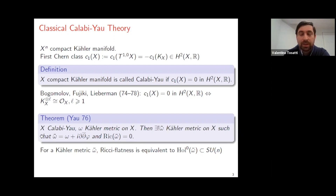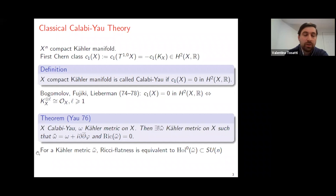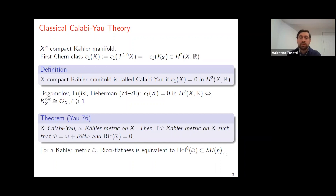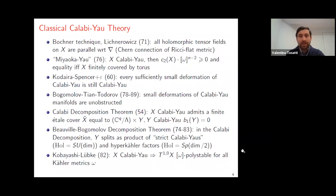This remarkable result shows that Calabi-Yau manifolds are exactly the compact Kähler manifolds that admit Kähler metrics with vanishing Ricci curvature. As is classically known, when you have a Kähler metric, Ricci flatness — or the holonomy of a Kähler metric — is contained in U(n), and Ricci flatness is equivalent to the restricted holonomy being contained in SU(n). So you have a reduction of the holonomy from the general Kähler case U(n) to the special unitary group SU(n).